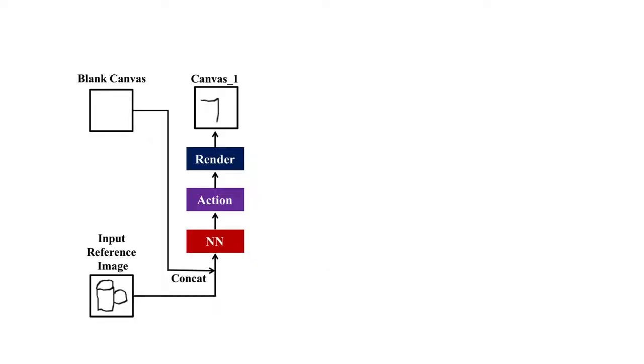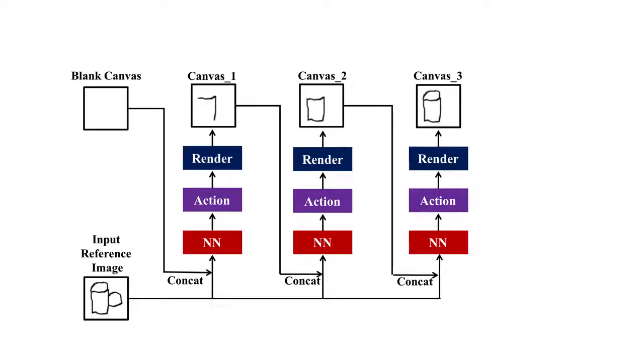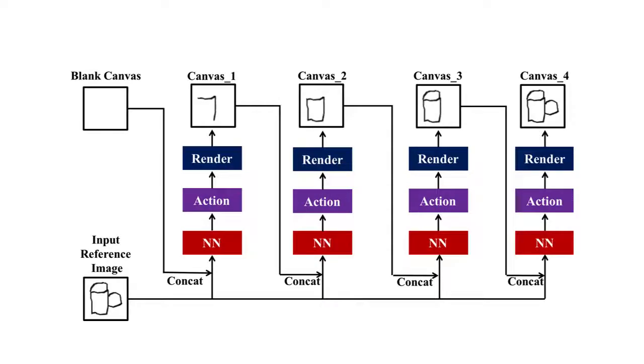The general unrolling procedure is like the following. Given a blank canvas and a reference image, the neural network will predict the pen's action which leads to the drawing canvas 1. Now canvas 1 becomes the current canvas and the neural network predicts an action leading to canvas 2. Similarly, we can get canvas 3 and the final canvas.